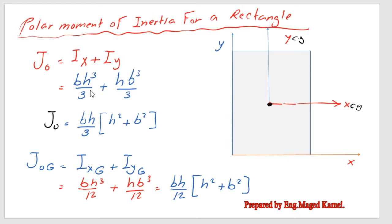Knowing that the moment of inertia I_X for the external X coordinate is BH cubed over 3, while for the Y axis will be H B cubed over 3.